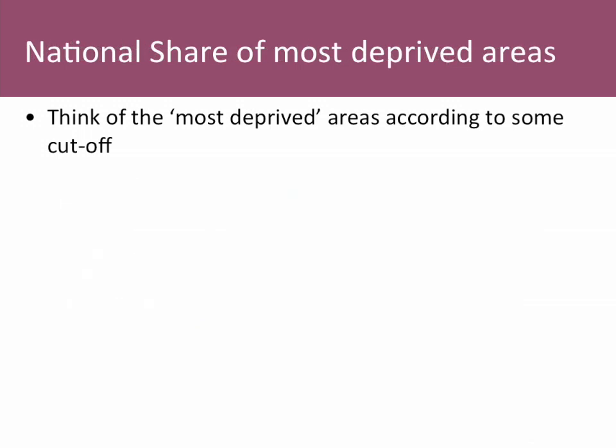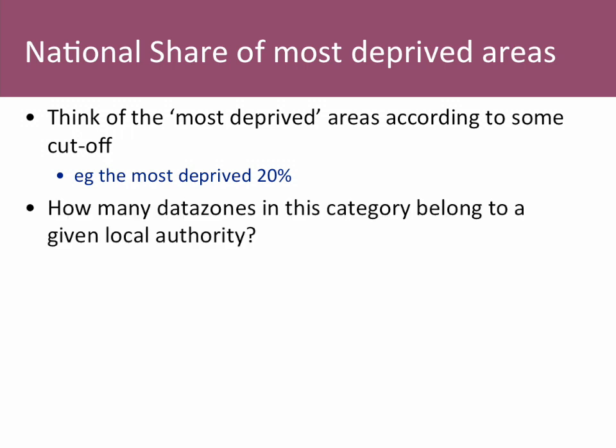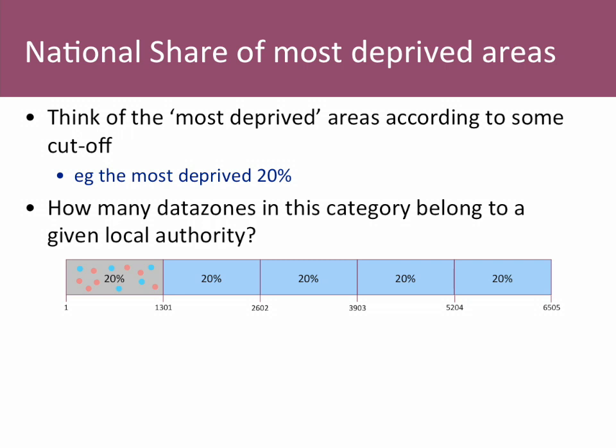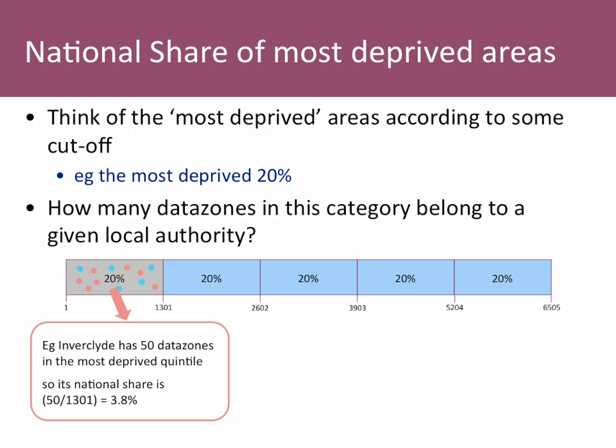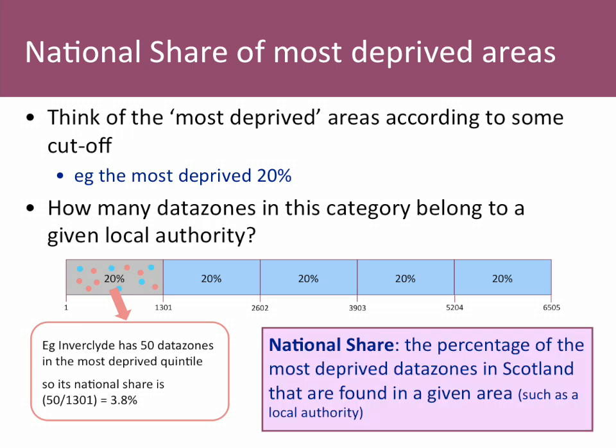One thing you shouldn't do with the SIMD is average or aggregate data zone ranks to get a rank for a larger area. Instead, if you're interested in local authorities, you can look at how many data zones in that area fall into the most deprived categories — this is called the national share. For example, in Inverclyde there are 50 data zones that are in the 20% most deprived, out of 1,301 across the whole of Scotland, giving a national share of 3.8%.